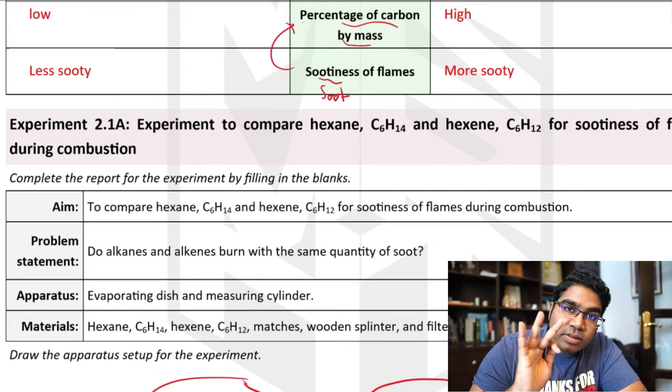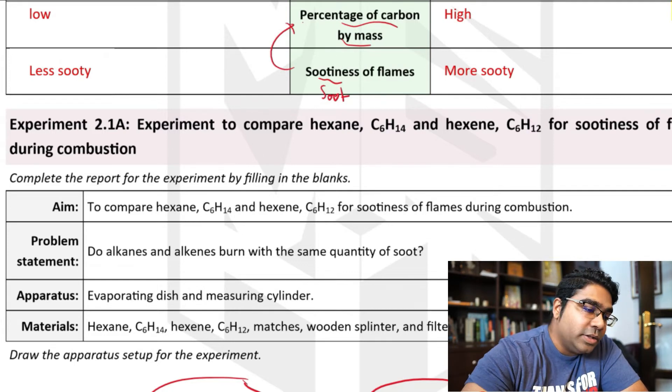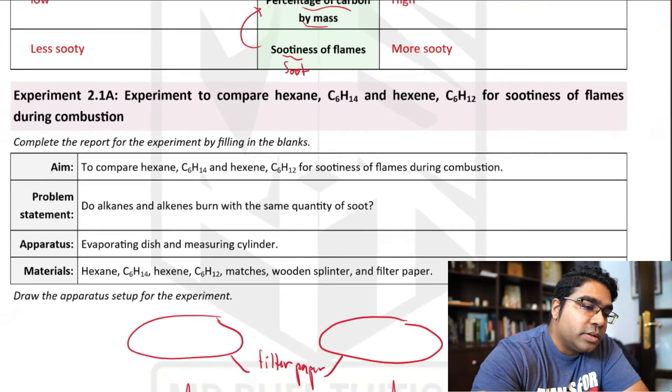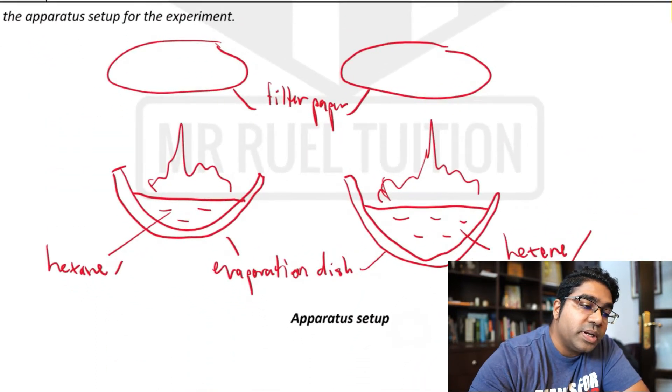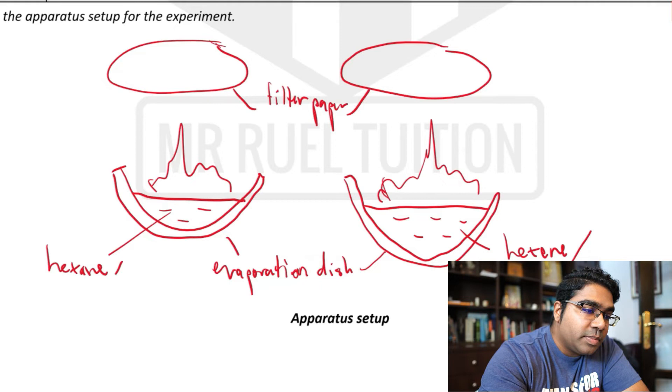We can conduct three simple tests to differentiate between alkanes and alkenes. One is of course using the sootiness of the flame. And how we test the sootiness of the flame is you just burn hexane and hexene, place a filter paper on top.